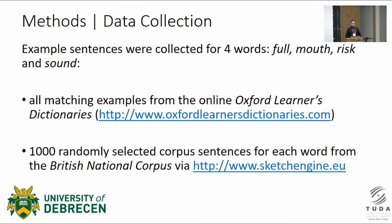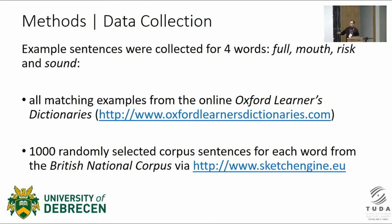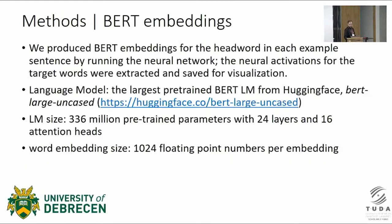Let me introduce our methods of analysis. We process occurrences of four lemmas — this is a case study — full, mouth, risk, and sound, in sentences from two sources: the Online Oxford Learner's Dictionary, using all example sentences that had the exact lemma, and one thousand randomly selected corpus sentences for each word from the British National Corpus. We produced BERT embeddings for the headwords in each example sentence by running the neural network, and the neural activations for the target words were extracted and saved for visualization.